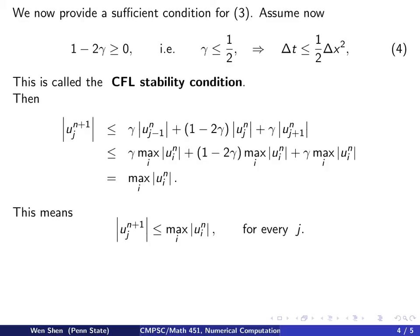So summing up, we have shown that the absolute value of U_J^(N+1), maximum of J, is bounded by the max of U_I^N,